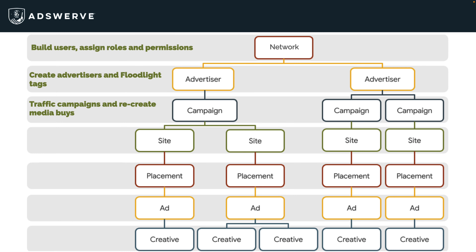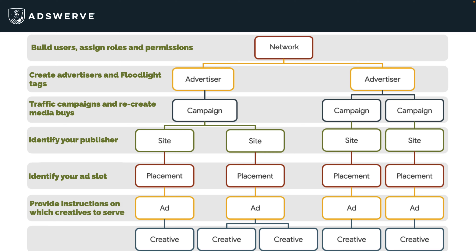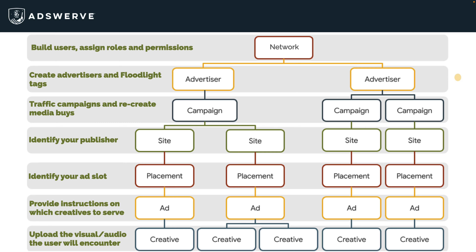Below the campaign level are all the other hierarchy levels in your trafficking sheet. The site represents your publisher. The placement represents your ad slot. The ad provides instructions for which creatives serve, and the creative is your actual creative asset. You can apply a lot of properties at higher levels that lower levels will then inherit, which saves you time when trafficking out your campaigns.